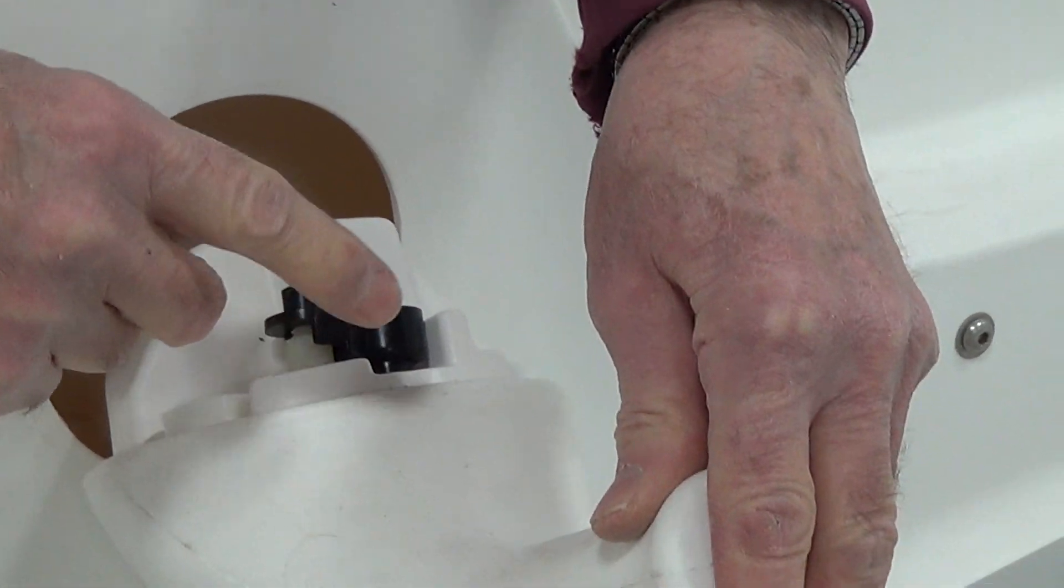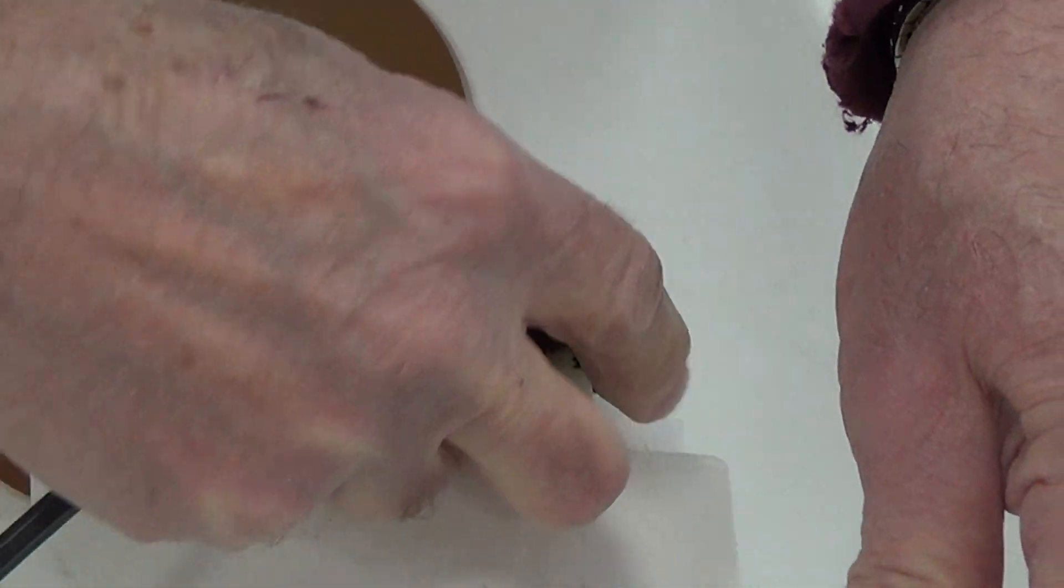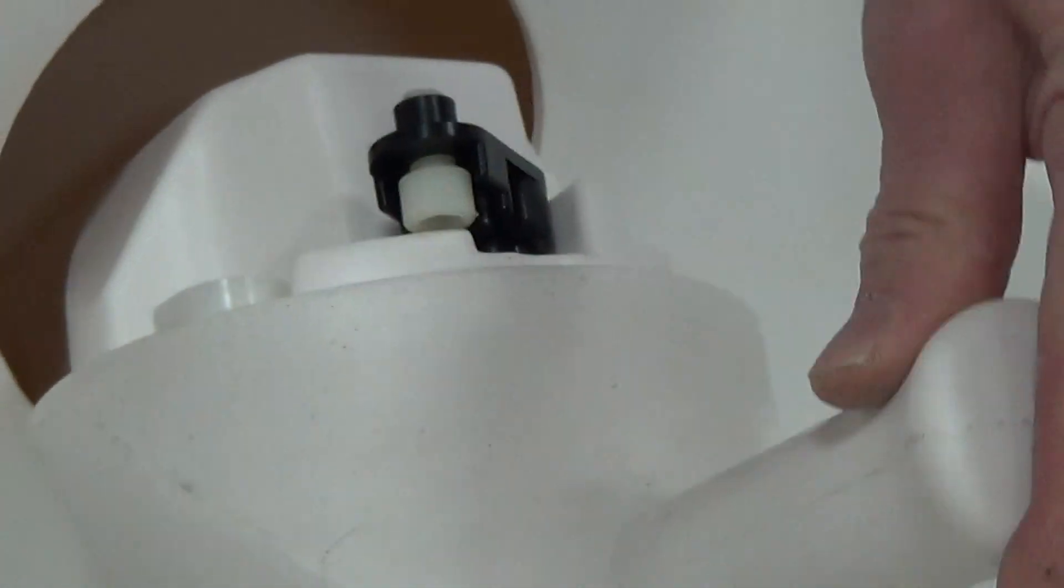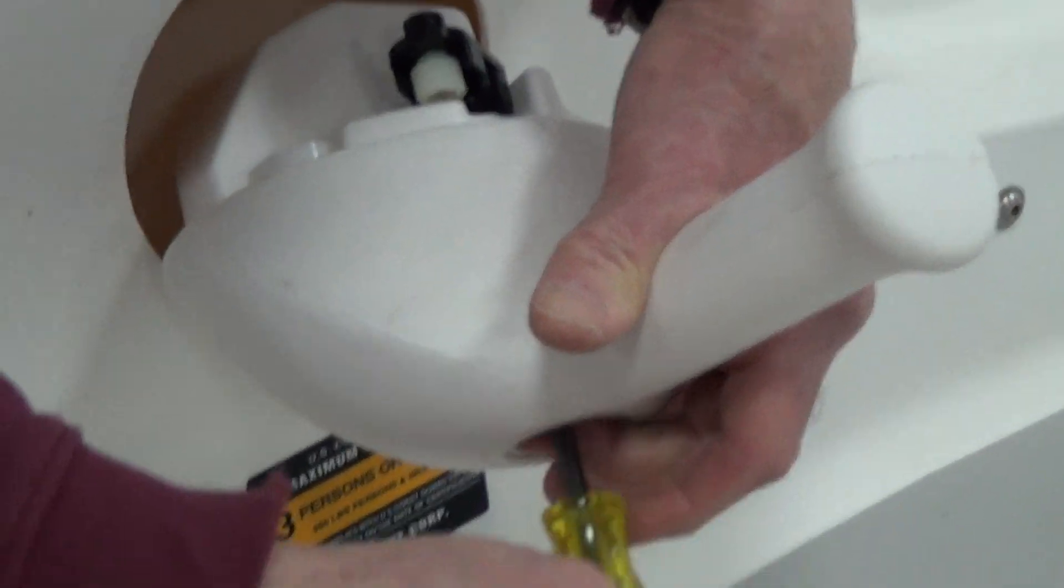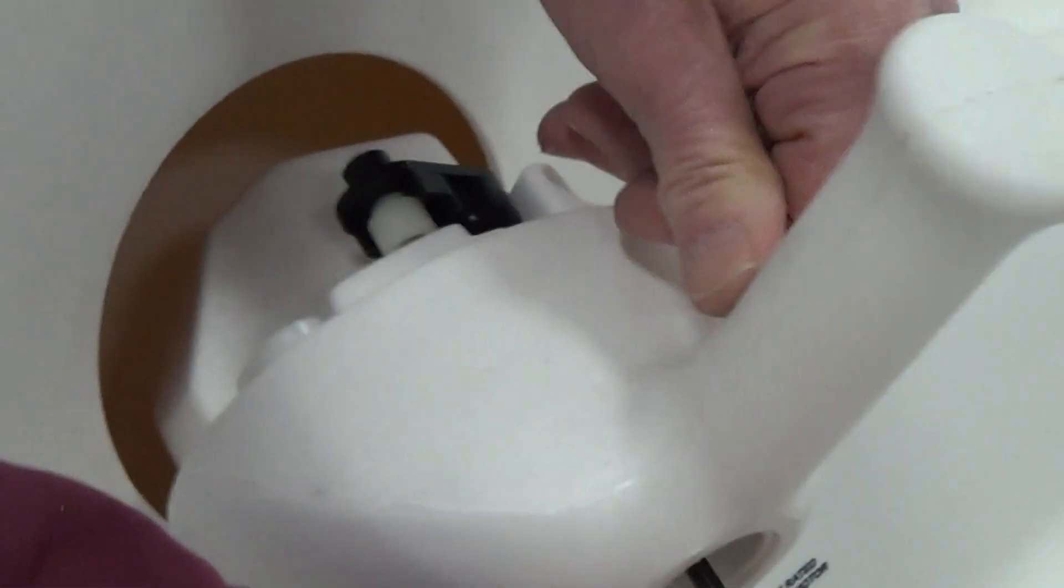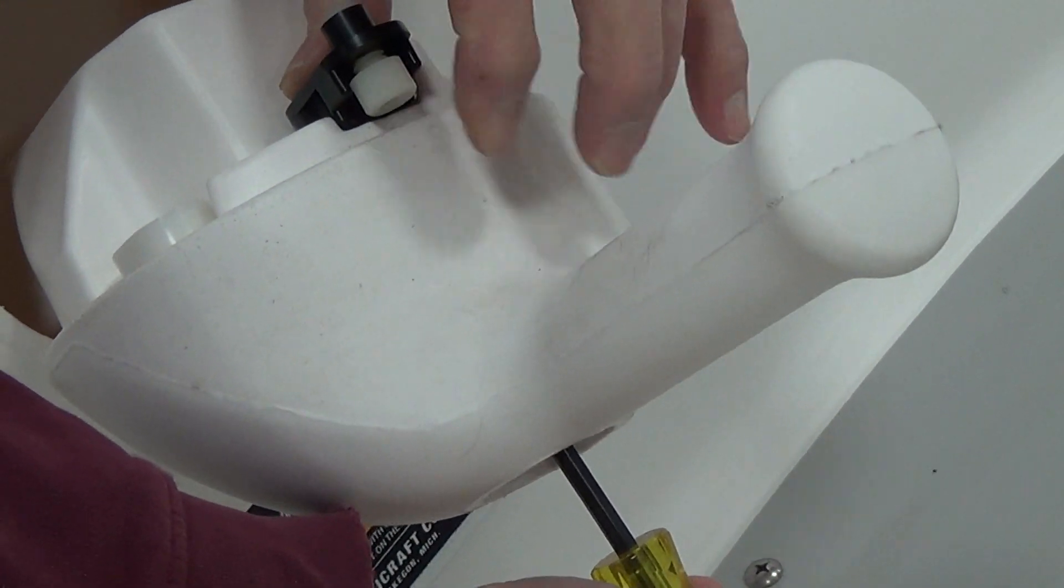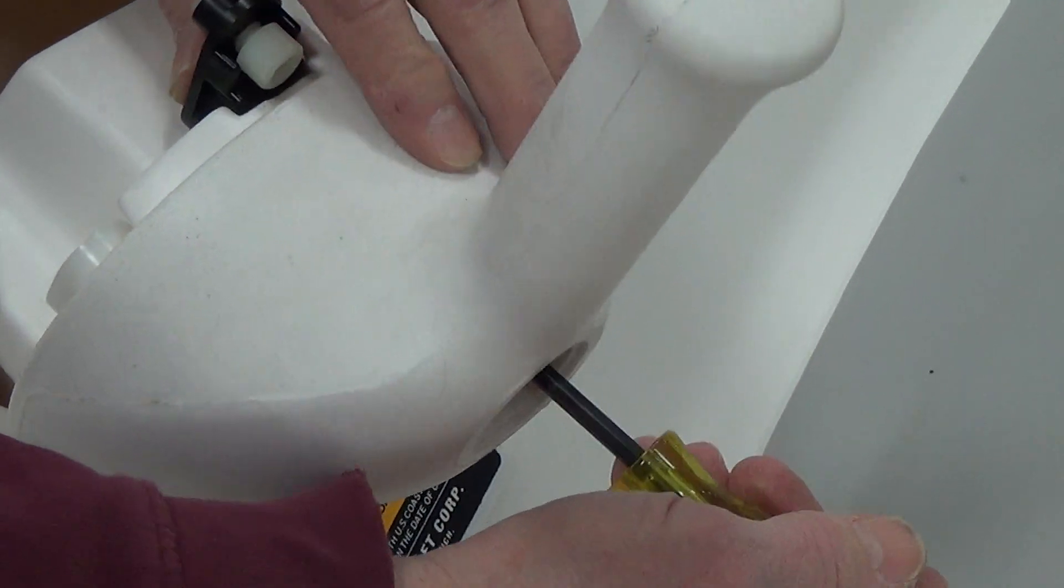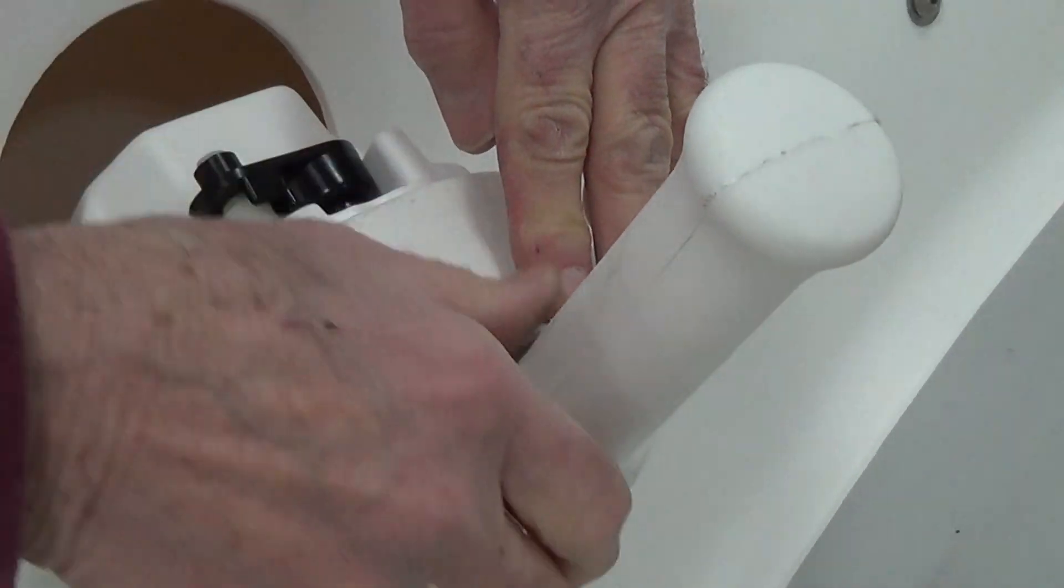This is what holds the steering handle in the boat. This is what we call a quarter-turn fastener. And when you're turning this here, you're turning this quarter-turn fastener from this position, which retains the steering handle in there, to this position, which lets you pull it through the holes.